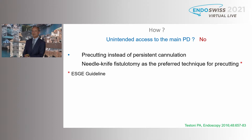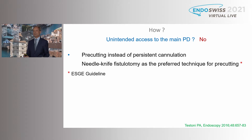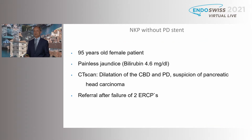In case we have no unintended access to the main pancreatic duct, according to the ESGE guidelines, precutting instead of persistent cannulation — a needle knife fistulotomy — is the preferred technique. I do this differently. Fistulotomy means cutting on top of the papillary roof in the area of the suspected direction and location of the CBD. I prefer to cut from the papillary orifice upwards, because then I know the direction more easily.